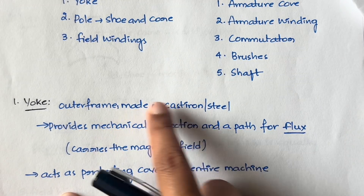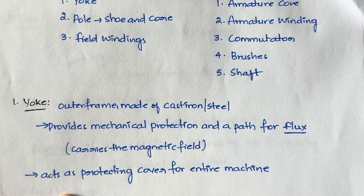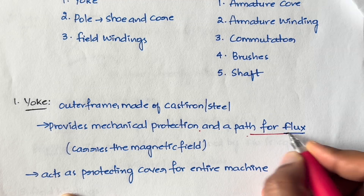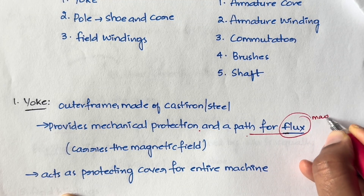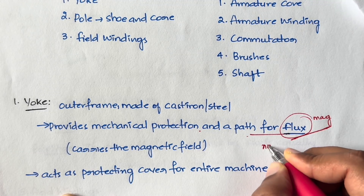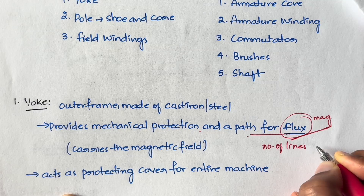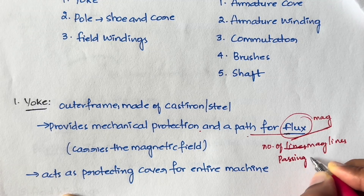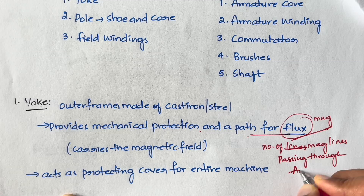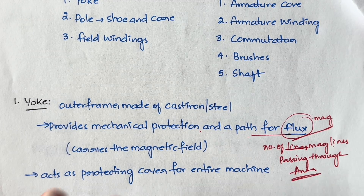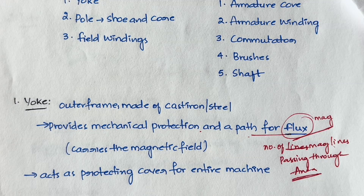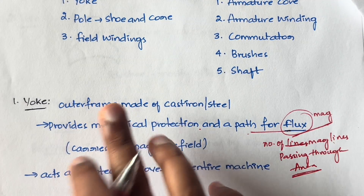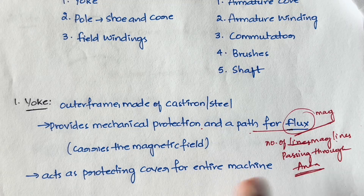Let's understand each part in detail. First is the yoke. The yoke is the outer frame; it is made up of cast iron or steel. What it does is provide mechanical protection and also provide a path for flux. Flux is magnetic flux — the number of magnetic lines passing through a given area. This yoke will carry the magnetic field and act as a protecting cover for the entire machine.